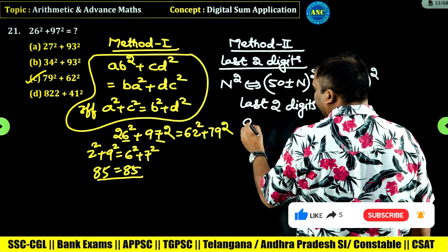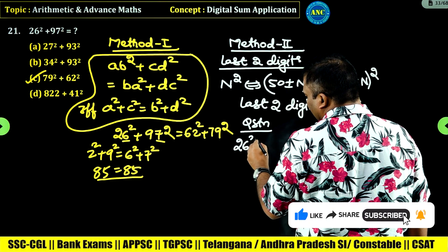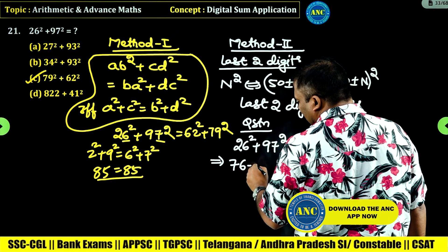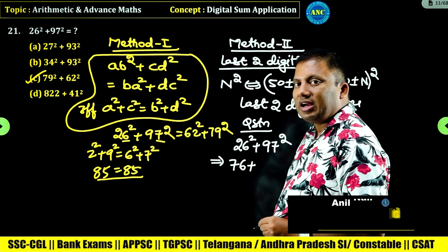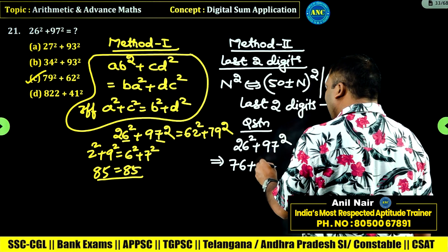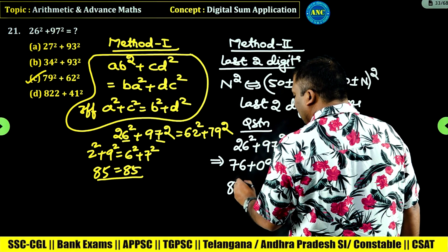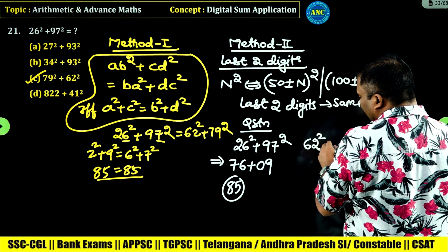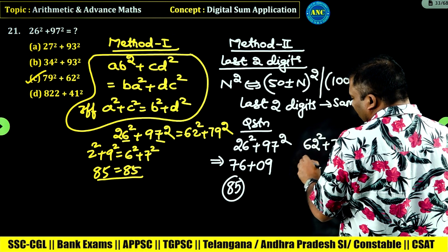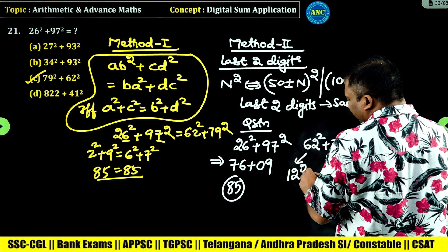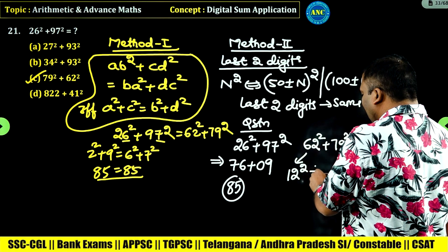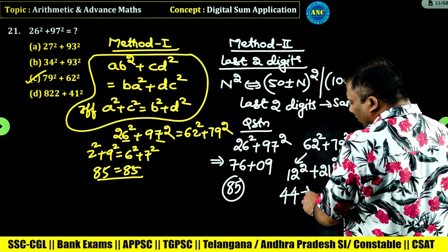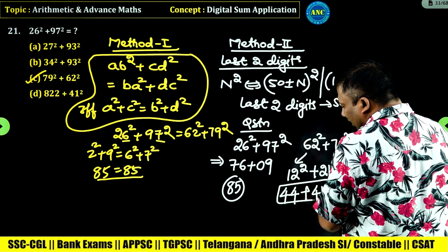Now see the question: 26 square plus 97 square. 26 square is 676, so last two digits are 76. 97 is 100 minus 3, so its last two digits match 3 square, which is 09. 76 plus 9 is 85. For the reverse: 62 is 12 more than 50, so last two digits match 12 square, which is 144 — giving 44. 79 is 100 minus 21, so last two digits match 21 square, which is 441 — giving 41. 44 plus 41 is 85.